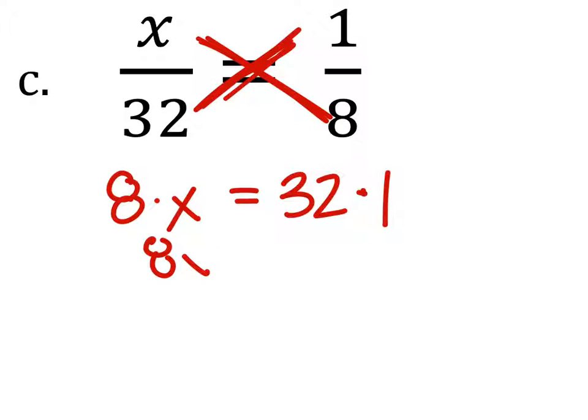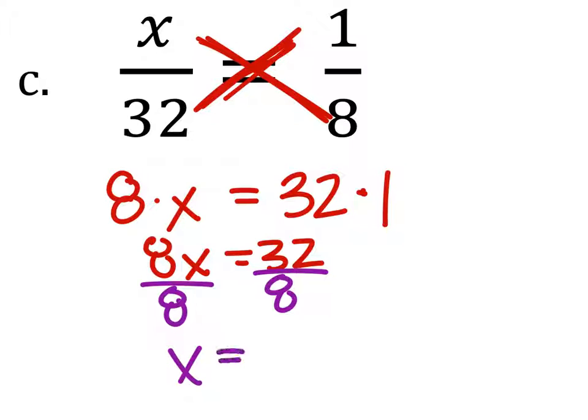So we have 8x equals 32. Then we solve this like any regular equation by dividing both sides by x—I mean 8. So x equals 4. Bam, done.